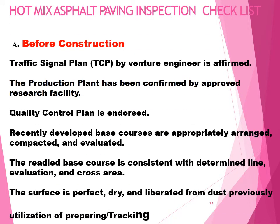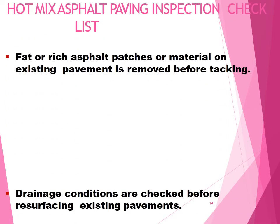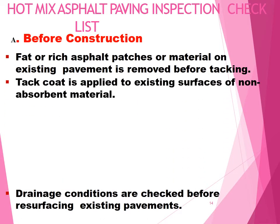Hot mix asphalt paving inspection checklist — before construction: the traffic control plan by the project engineer is confirmed. The production plant has been approved by approved laboratories. The quality plan has been approved. Recently developed base courses are properly arranged, compacted, and graded. The prepared base course is consistent with the specified line, grade, and cross-section. The surface is clean and free from dust, and has been previously treated with tack coat. Fat or rich asphalt patches on existing pavement are removed before tacking. Tack coat is applied to existing surfaces of non-absorptive materials.